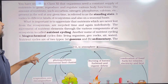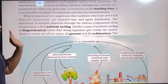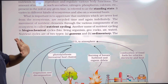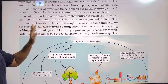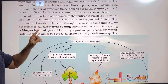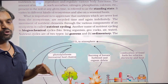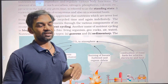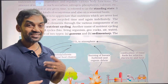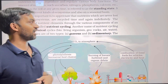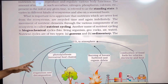What is important to appreciate is that nutrients are never lost from the ecosystems — they are recycled time and again indefinitely. So carbon, nitrogen, phosphorus, etc. are never exhausted; they are recycled.